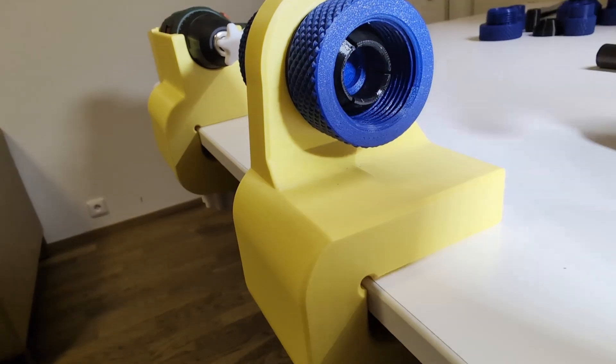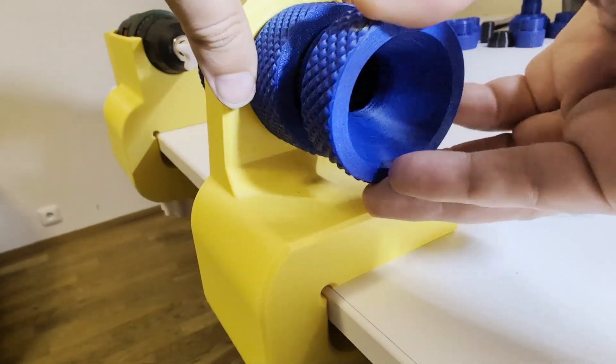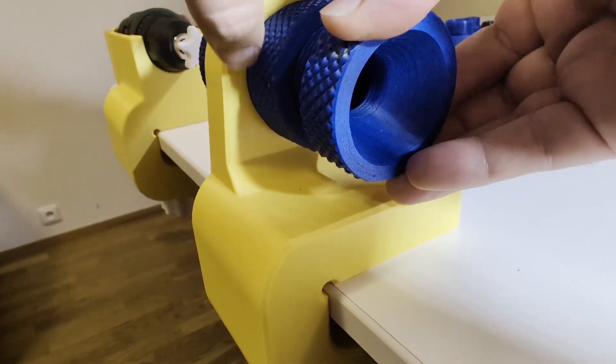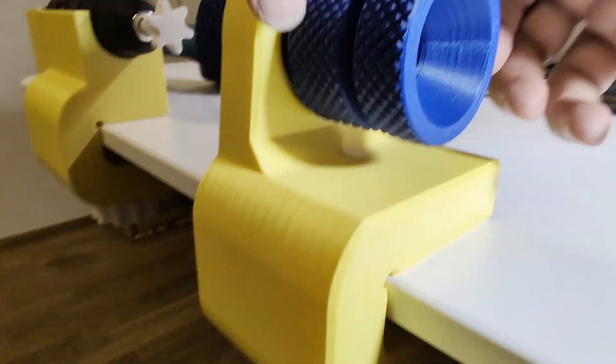Then I insert the rubber clamping element. Thanks to its three slots it grips the shaft securely without squeezing too hard. Finally I lock everything down with the clamping screw.